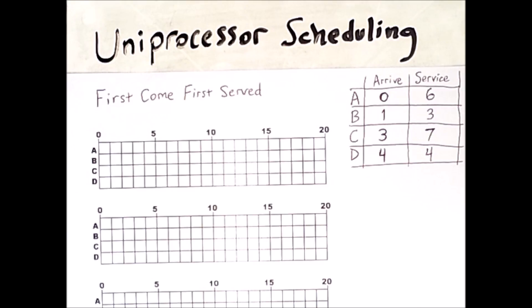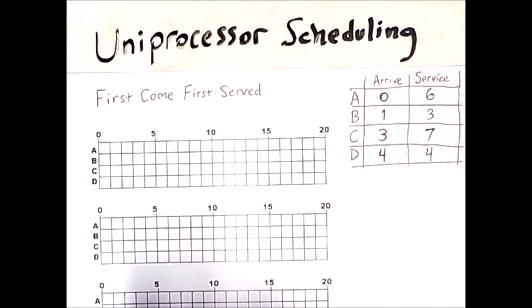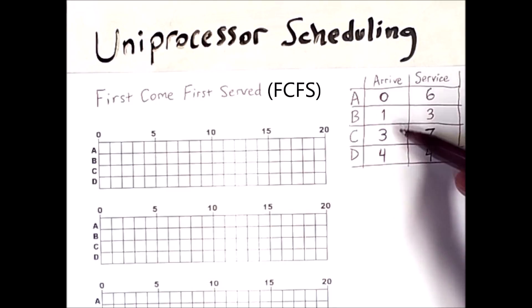Now the first and simplest of these that we'll discuss is first come first serve, also known as simply FCFS, and to do this we will need to have a table that indicates when each process arrives in the system and how much service time it requires. So this is the amount of time it will take in total for the process to run to completion.